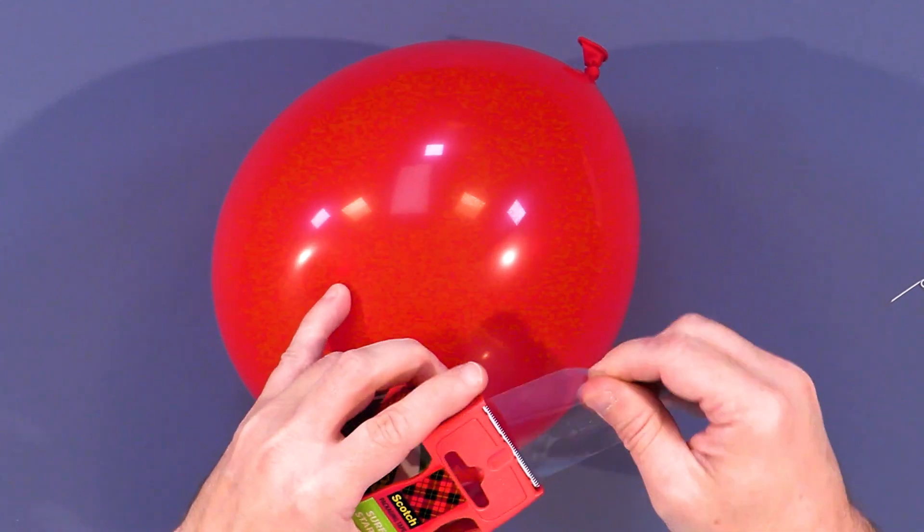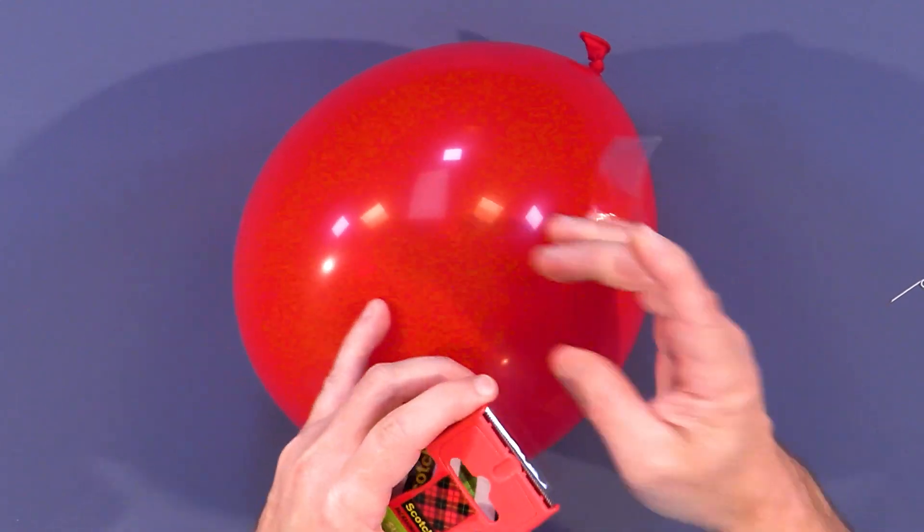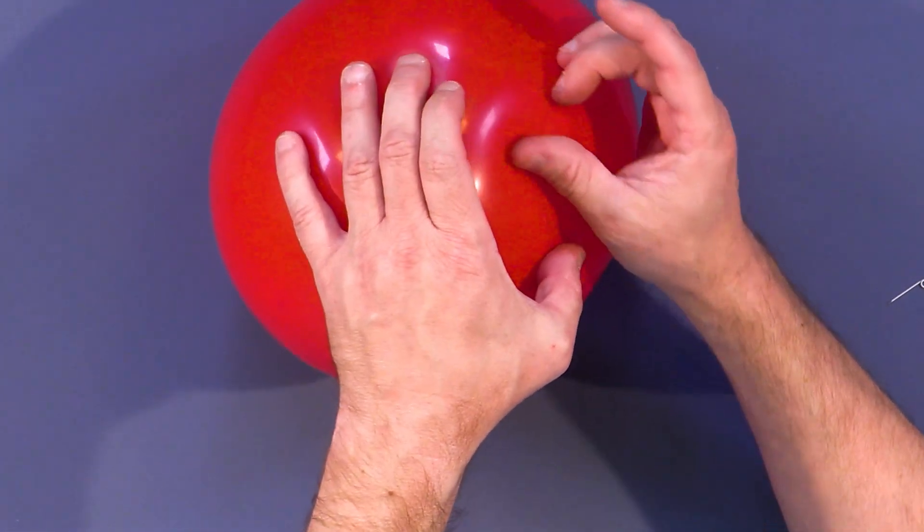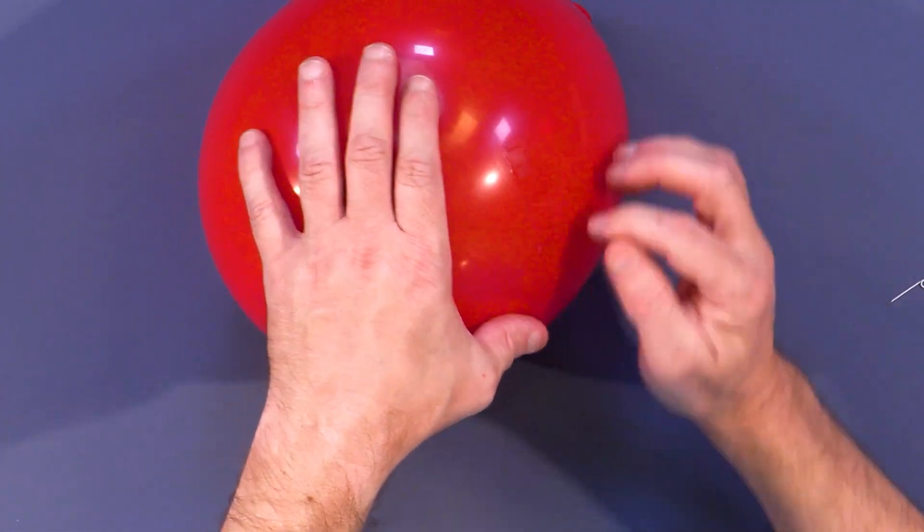Now try this. Grab a small piece of tape and put it on the side of the balloon. And we're just going to put it right on like that. So you see there's not too many air bubbles.